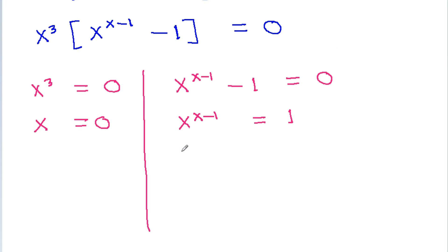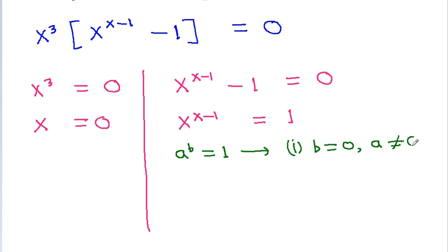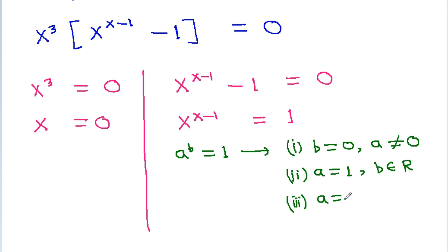If we have a power b is equal to 1, then the first solution is b is equal to 0 and a is not equal to 0. The second solution is a is equal to 1 and b is any real number. The third solution is a is equal to minus 1 and b is equal to an even number.